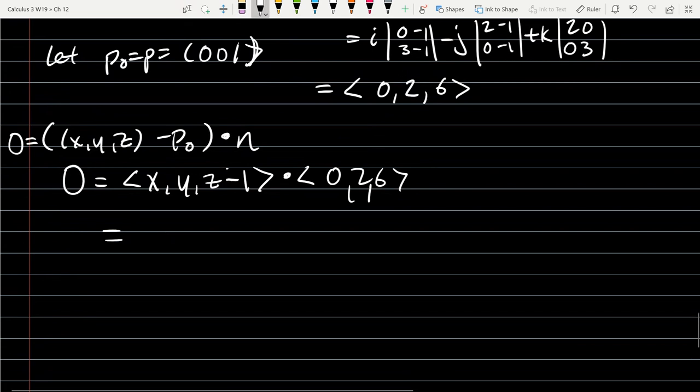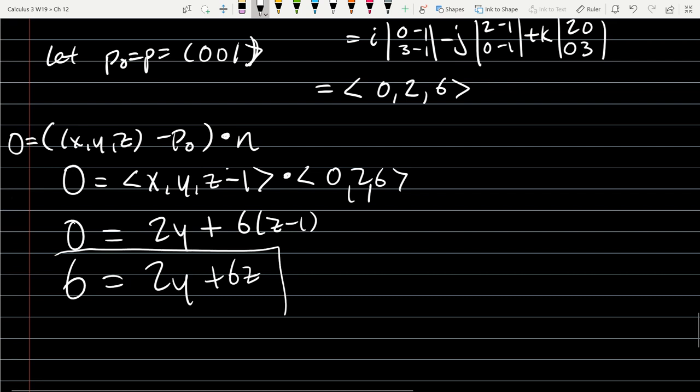So we've got 0x, 2y, plus 6 times z minus 1. That would be 0. 2y plus 6z minus 6. We'll add this to the other side. There we go. So that is the equation of our plane right there.